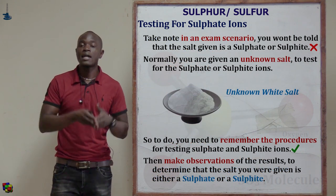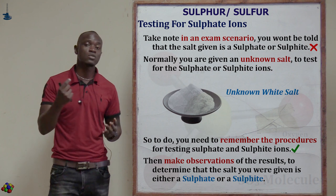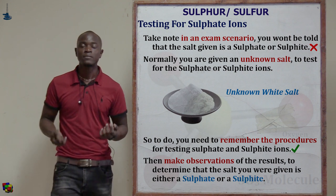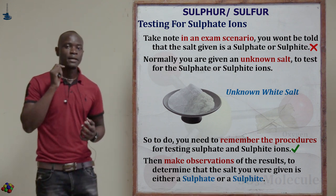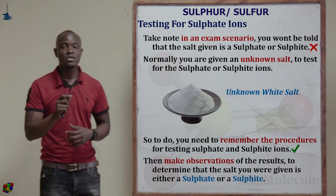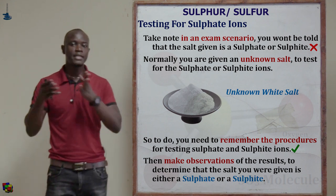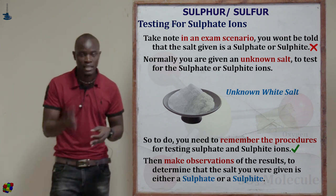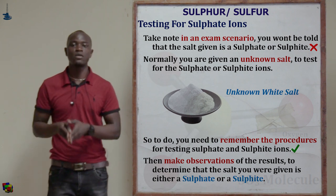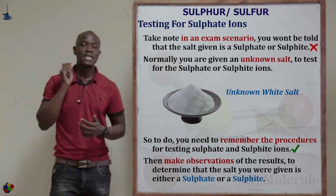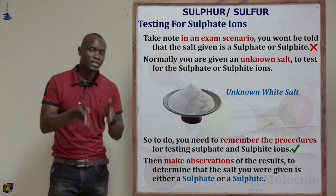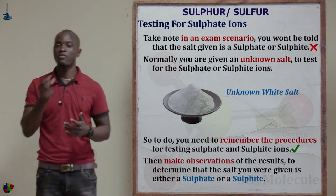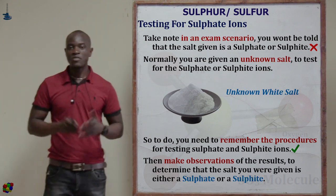If you have been given an unknown sample in an exam — labeled solid X or liquid X — you would say: we added two centimeters cubed of sample X in a clean test tube, followed by two centimeters cubed of barium chloride. Then two centimeters cubed of hydrochloric acid was added and observations made. You simply use the sample letter provided.